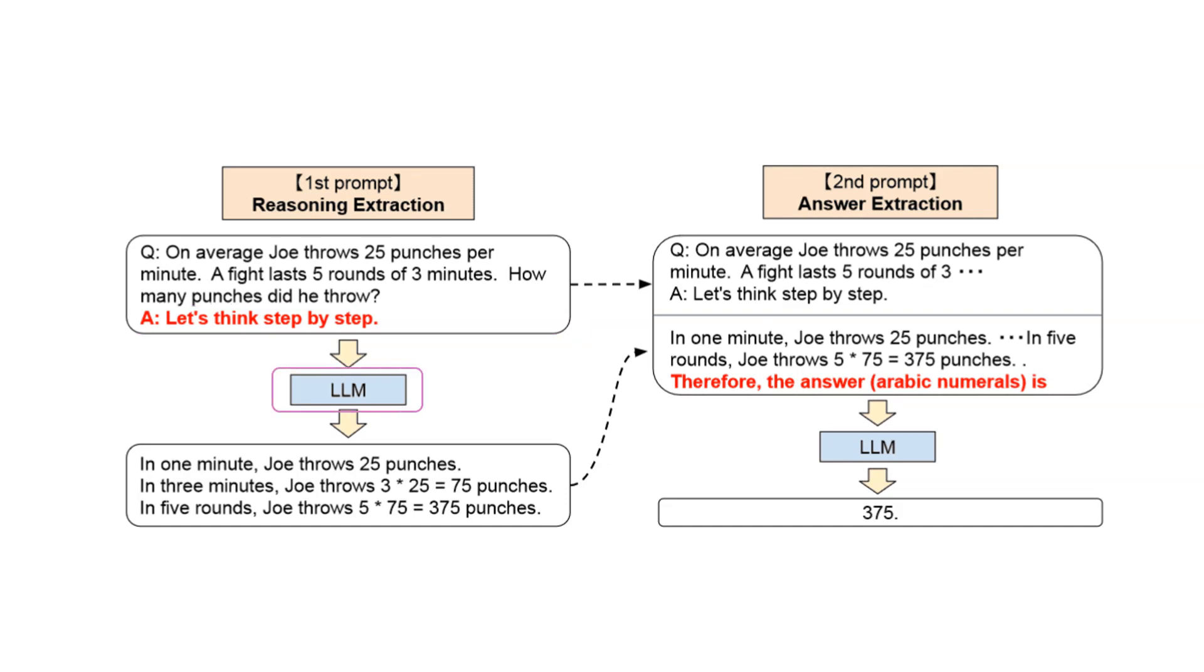The LLM then generates its own reasoning steps, based on its understanding of the prompt, and then generates the answer. In the second step, the model generates the answer based on the original prompt, magic phrase, and the generated reasoning steps.